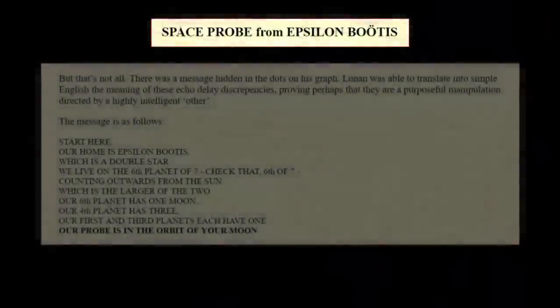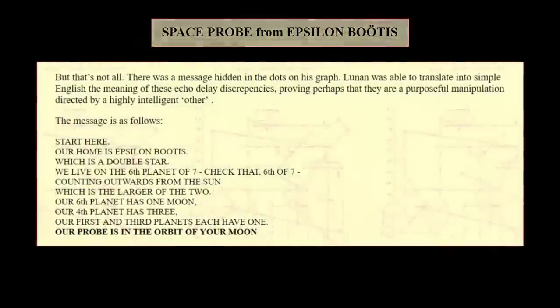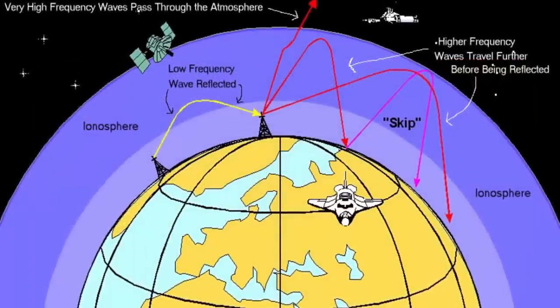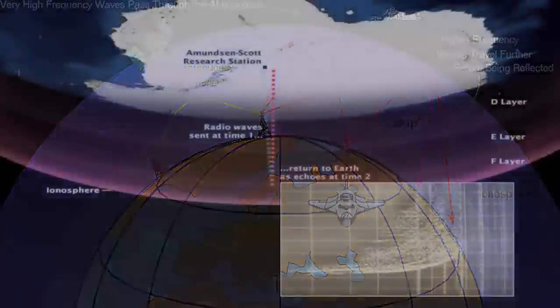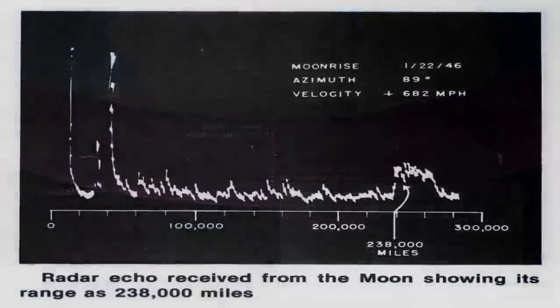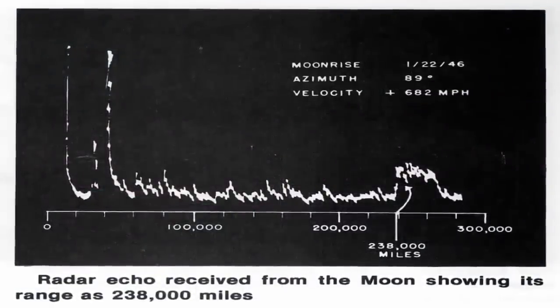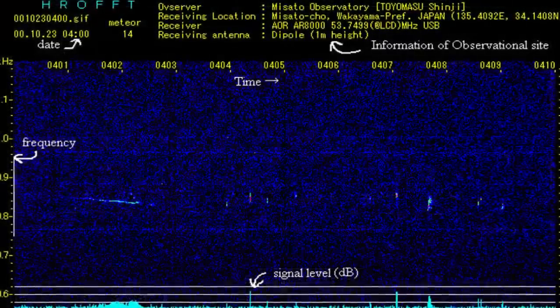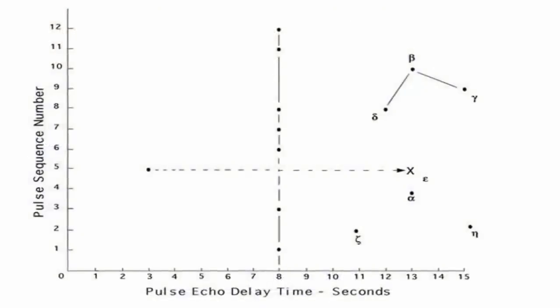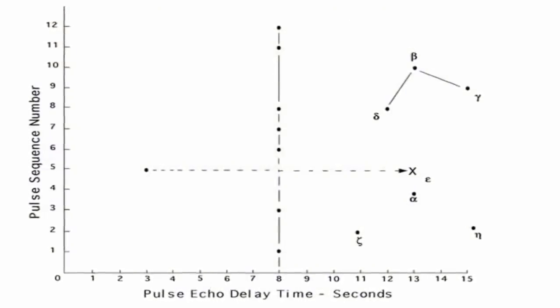In the January of 1974, a man by the name of Duncan Lunan published an article called Space Probe from Epsilon Butis. It concerned a mystery surrounding long-delayed radio echoes, or LDEs, first reported in the 1920s. Mysterious echoes of the transmitter's voice, which were far too powerful to have been simple reflections from Earth. Experimenters studying all over the world found that their outgoing pulses were being returned to them with a delay of three seconds, as if they were being amplified and returned by something at the distance of the moon, but definitely not the moon itself.